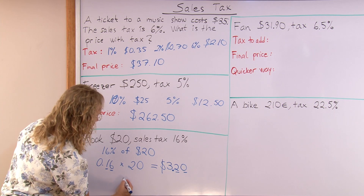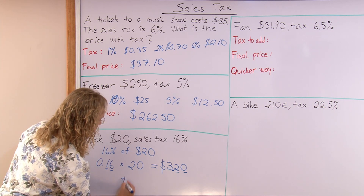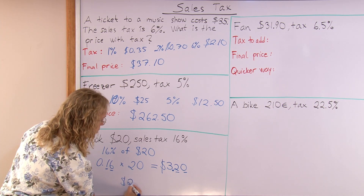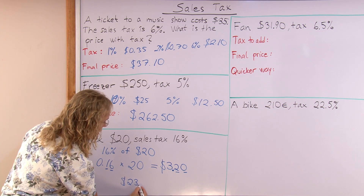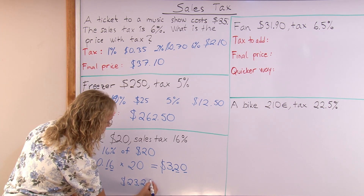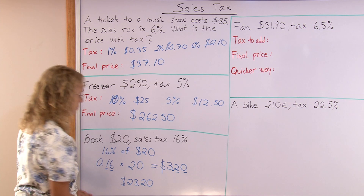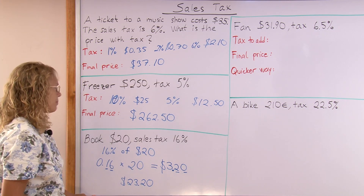So the decimal point goes here. The tax itself is $3.20, and the final price is of course $23.20.